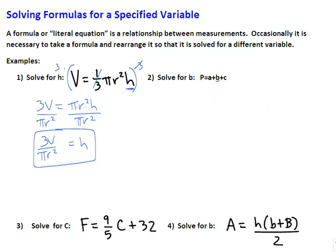Both A and C are being added to the B, so we can subtract both of them to the other side. Now on the left side, P, A, and C are not like terms, so I can't really do anything with them other than writing them side by side. So P minus A minus C. On the right-hand side, the A's cancel out, the C's cancel out, and we just have our B. And B is solved for, so we're finished.